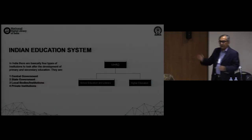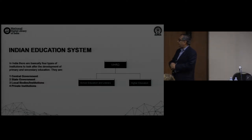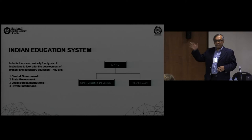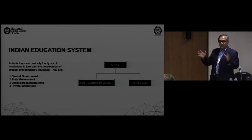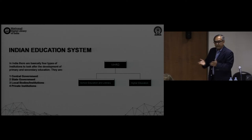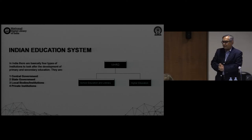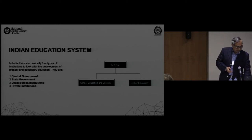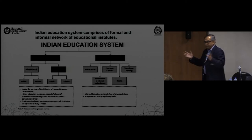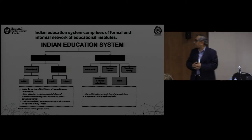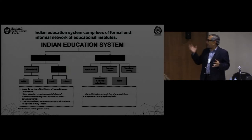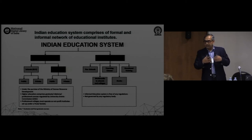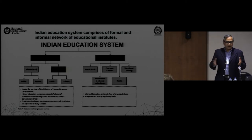We have primarily four stakeholders in education: the central government, which is the federal government; the government of every state — we have 29 states; and several local as well as private institutions. Our system is heavily divided between the formal education system, governed by the ministry, and the informal education system, which includes coaching classes, private institutions, vocational trainings, and so on.